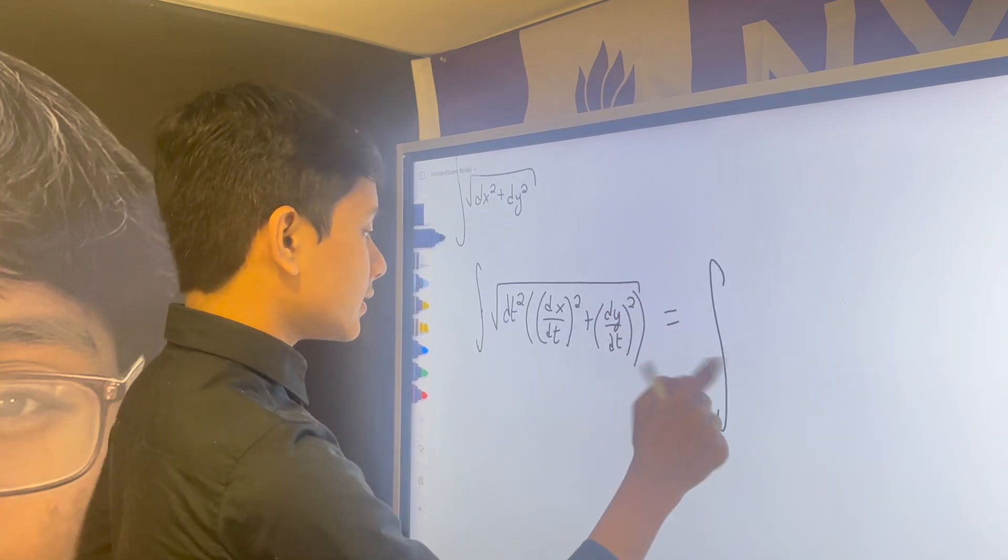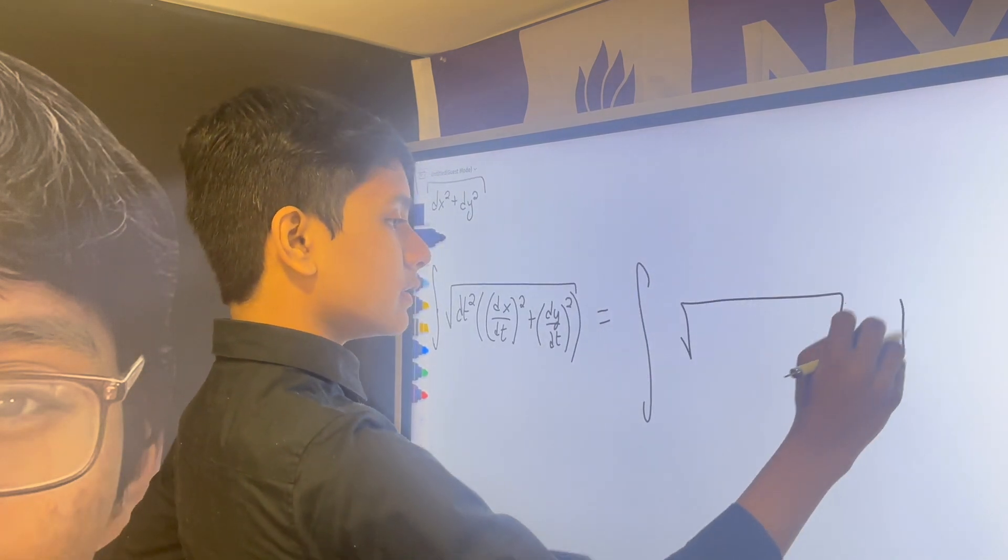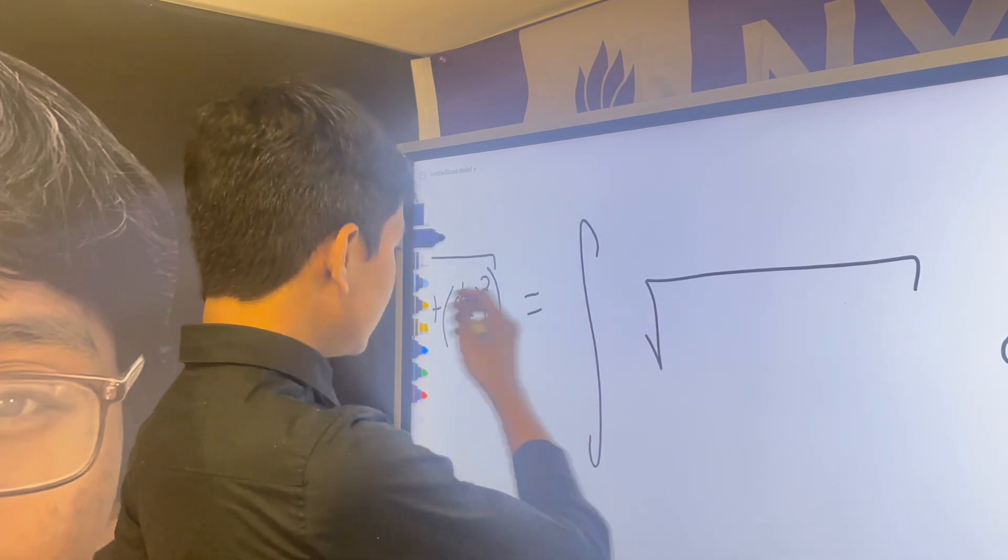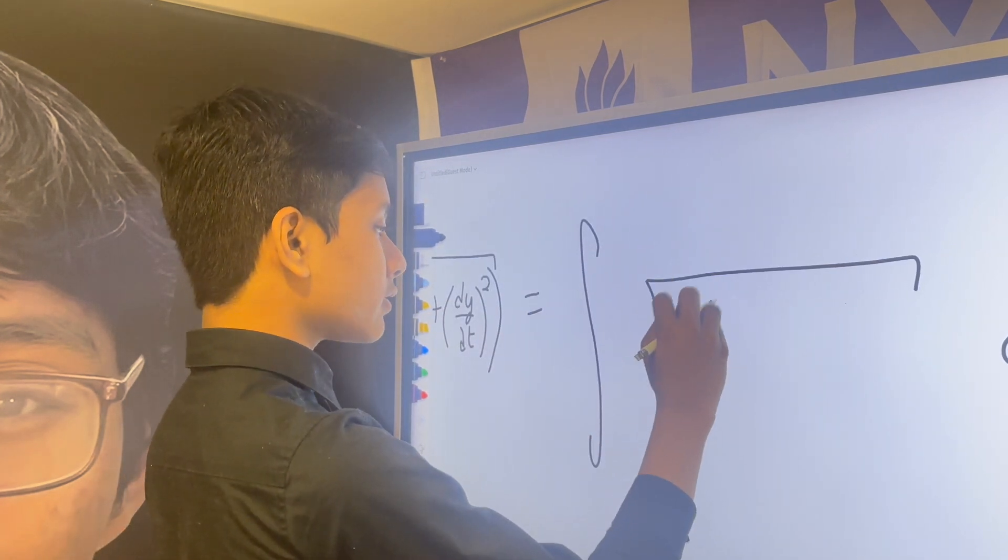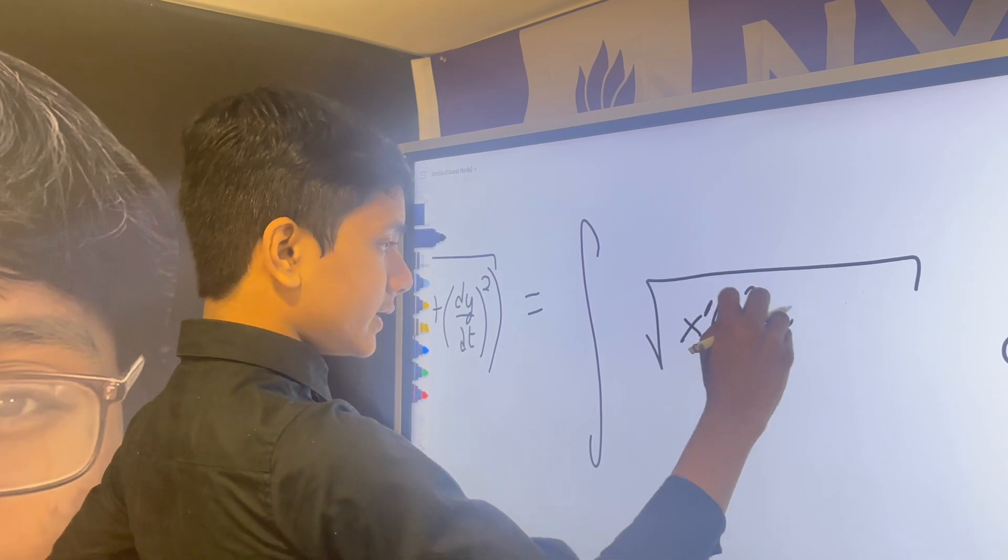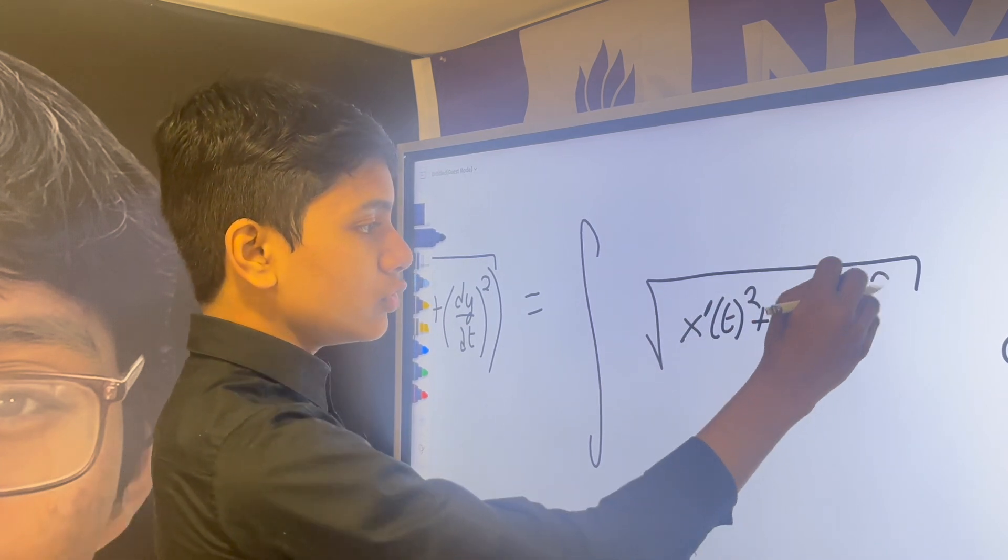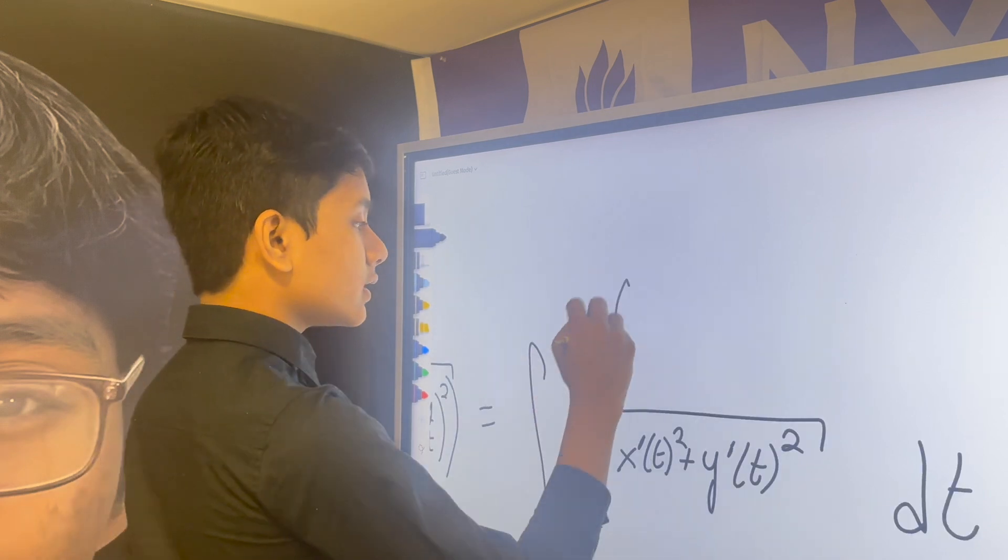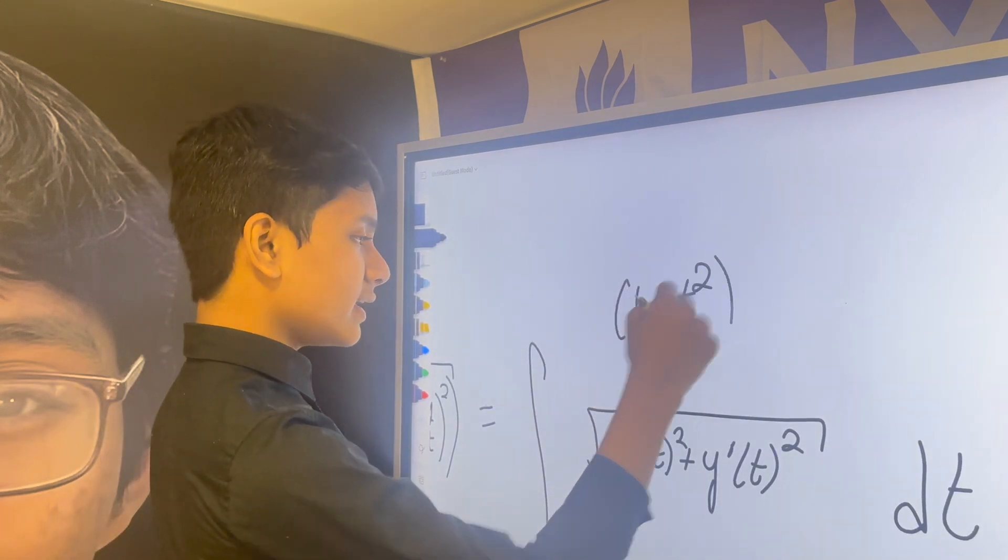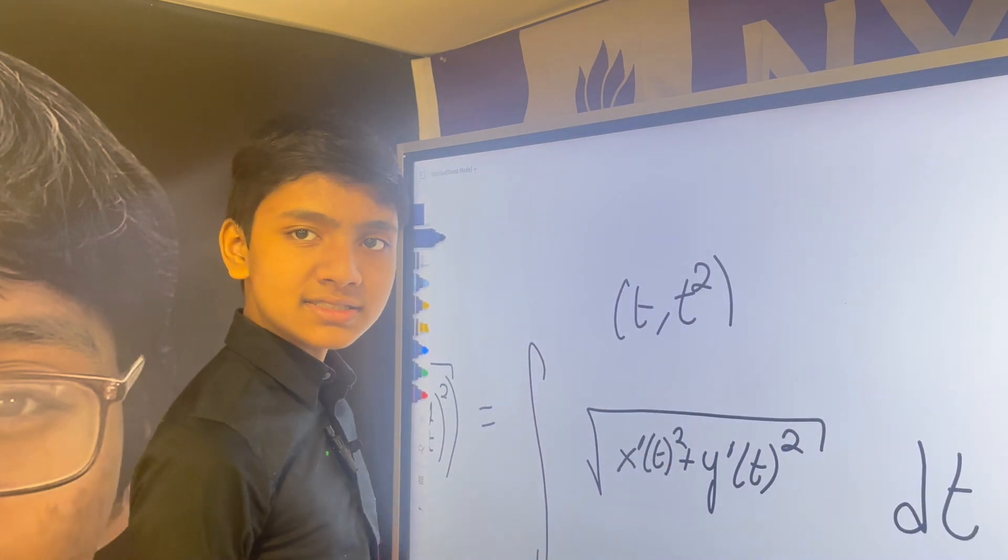So, that's just the integral of dt, dx/dt squared, dy/dt squared in the root. I mean, if you plug in the whole t comma t squared thing, it gives you the same results. So, that's nice.